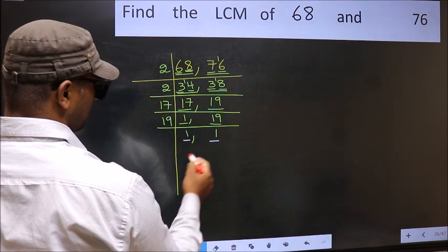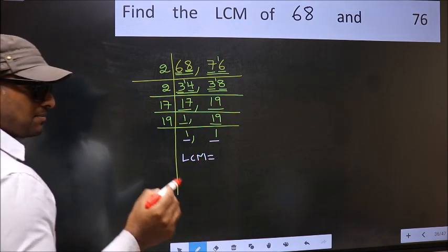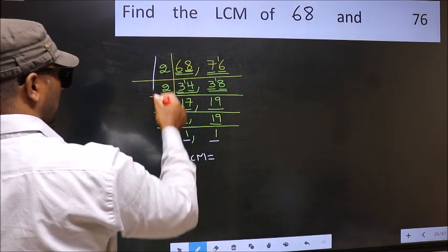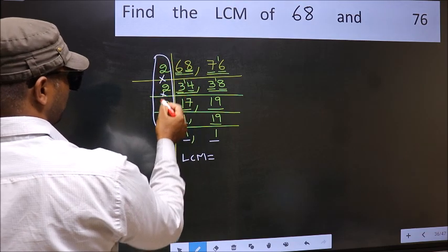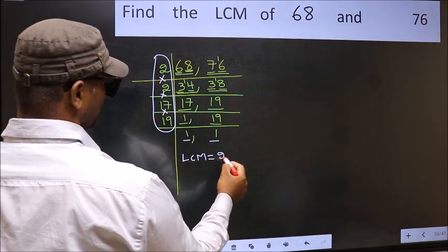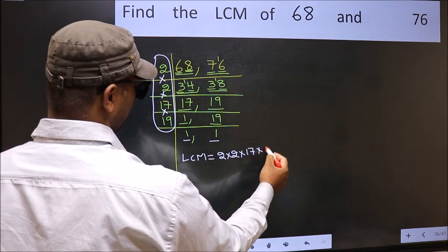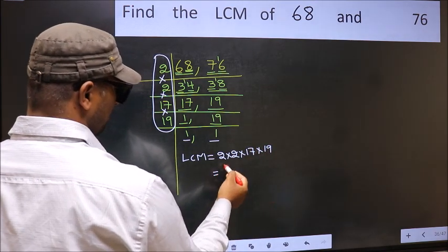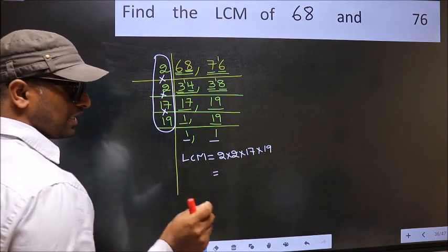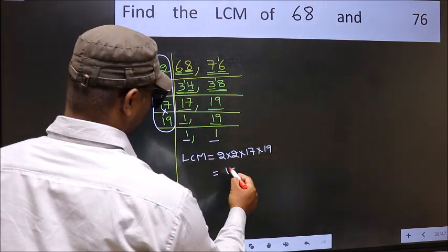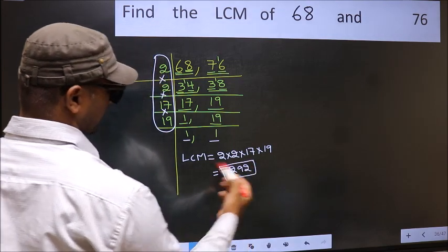Our LCM is the product of all the divisors: 2 × 2 × 17 × 19. When we multiply these numbers, we get 1292. So the LCM of 68 and 76 is 1292.